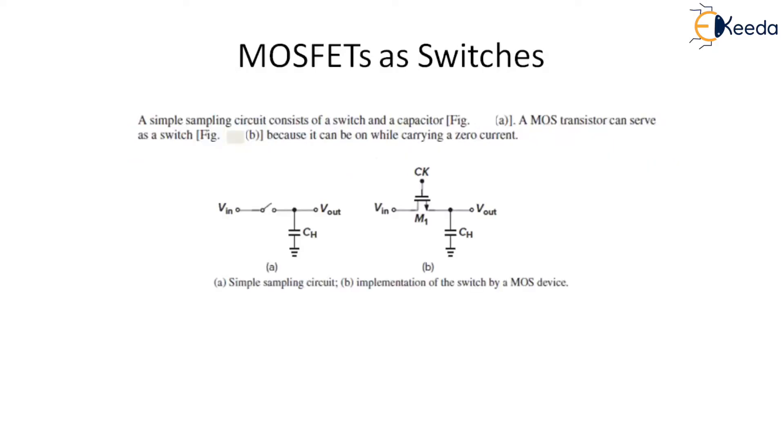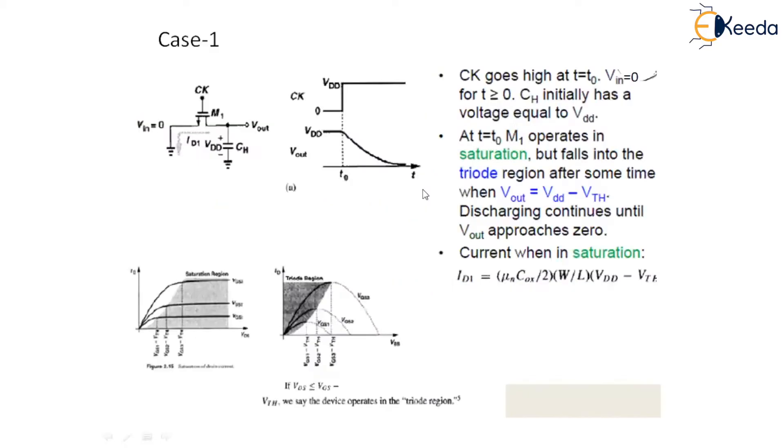So let's see MOSFET as switches. This is a simple sampling circuit which is consisting of a switch and a capacitor and a MOS transistor which serves as a switch because it can be on while carrying a zero current. This is a simple sampling circuit where we can implement a switch via MOS device. This is now MOS device M1 and a clock signal is applied at the gate terminal.